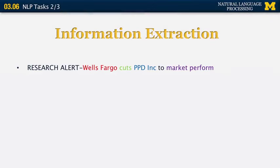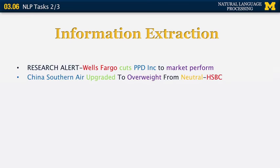Let me run through a specific example. Suppose you want to build a database of companies and how different rating agencies see them. In the first example, we have Wells Fargo, which is a major bank that cuts PPD Inc. to Market Perform. Market Perform is a rating for a company — very useful information for investment people. PPD Inc. is the company name, and cuts is the action taking place: Wells Fargo is lowering the rating to the next level down.